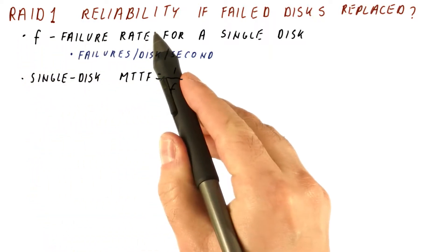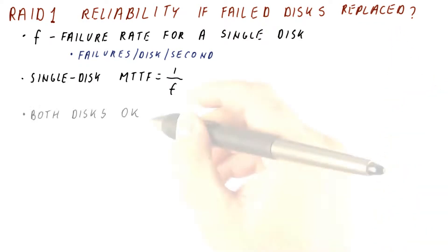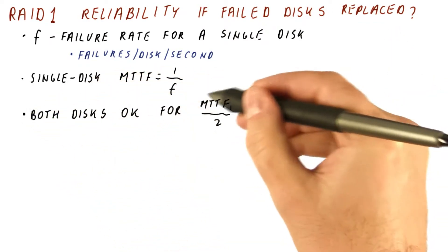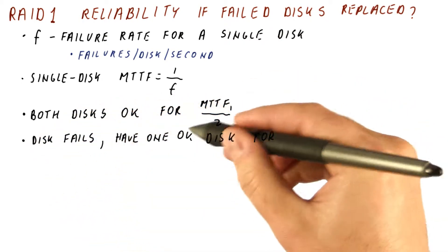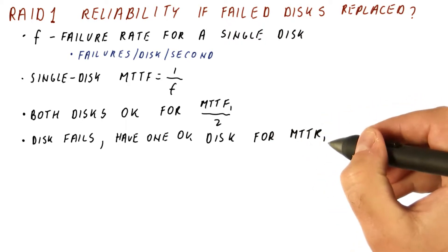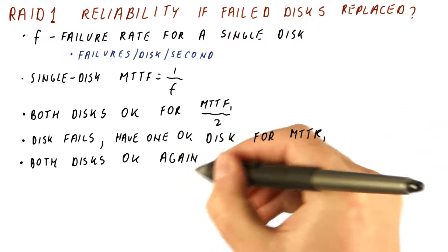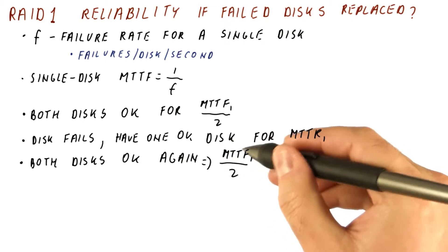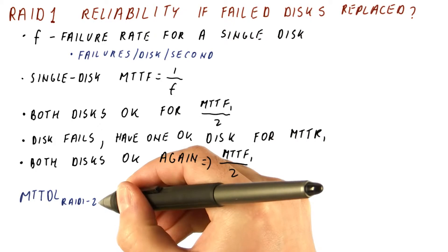What is RAID 1 reliability if we replace failed disks as soon as possible? We have the situation where both disks are okay for some period of time. Then a disk fails, and we have only one okay disk for the mean time to repair. After the repair, both disks are okay again, and then we again have this long until the next failure. So what is the mean time to data loss for RAID 1 with two disks?